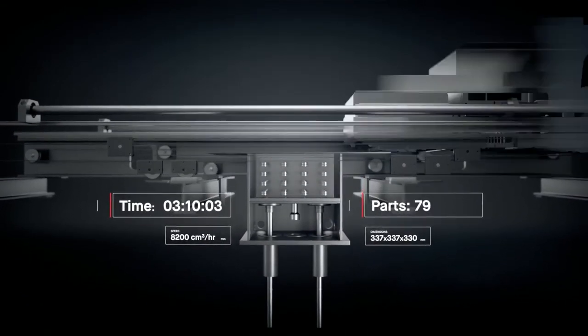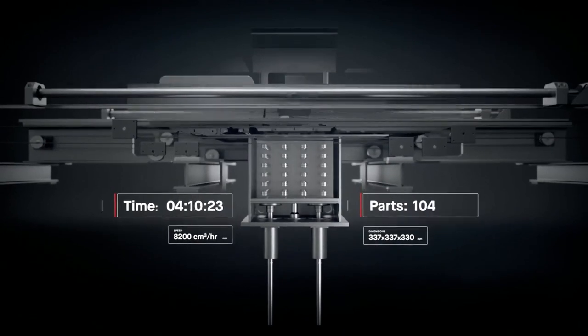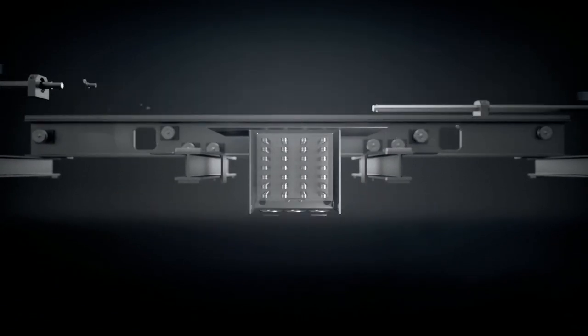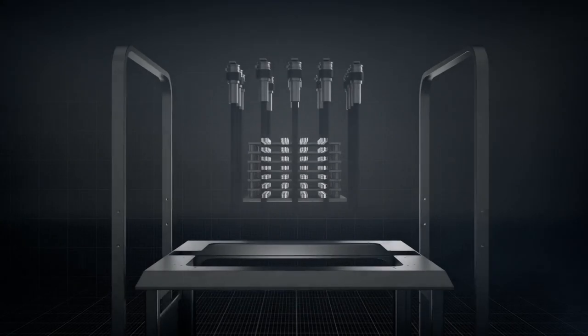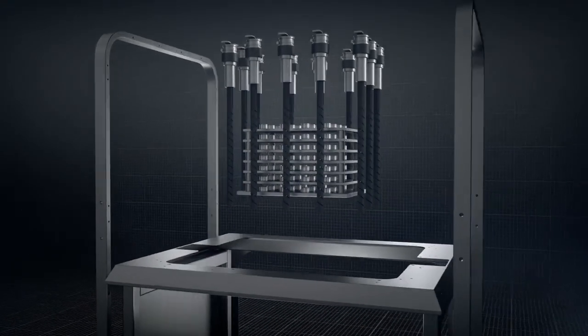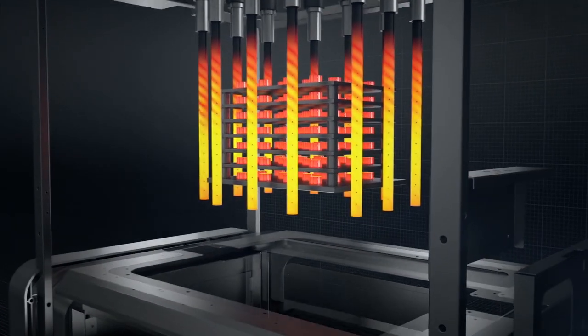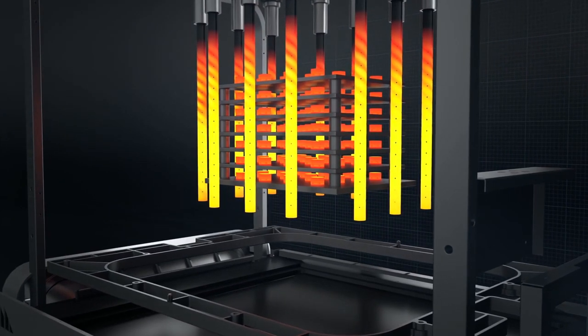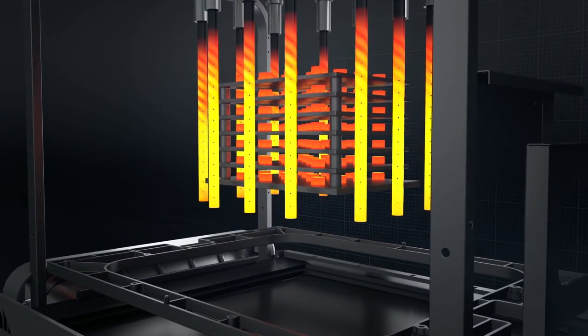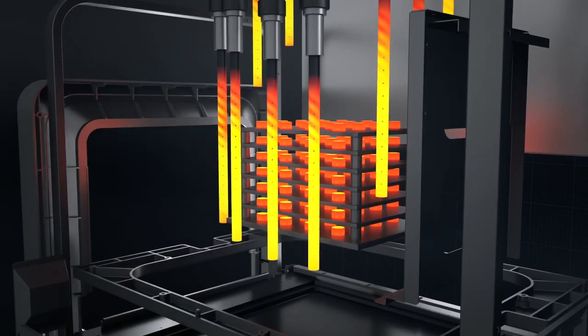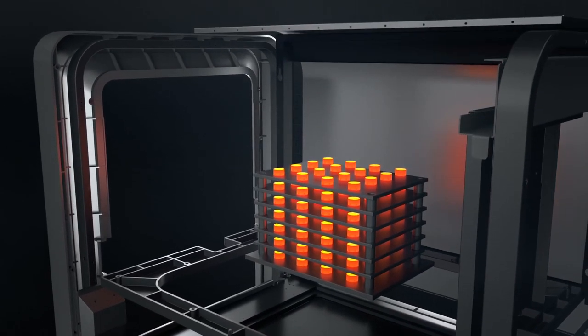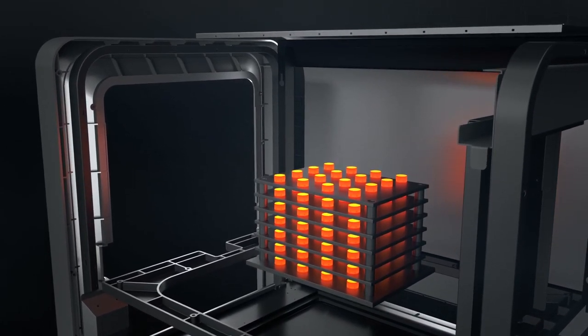Once printed, the build box is depowdered and brown parts are arranged onto sintering trays and placed into the furnace. A closed-loop thermal control system regulates temperatures in real-time as parts are heated to just below their melting point. Remaining binder is removed and metal particles are fused to form a dense solid.